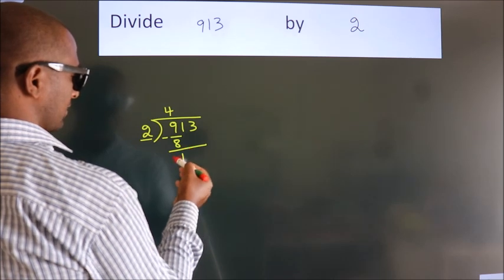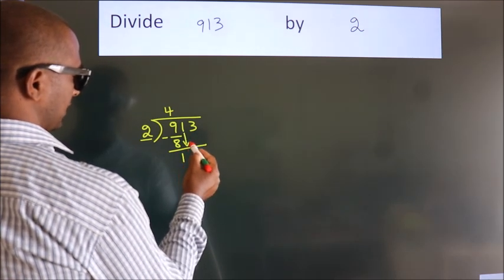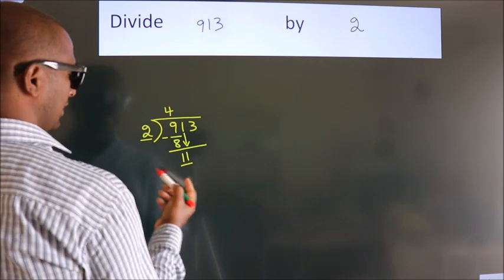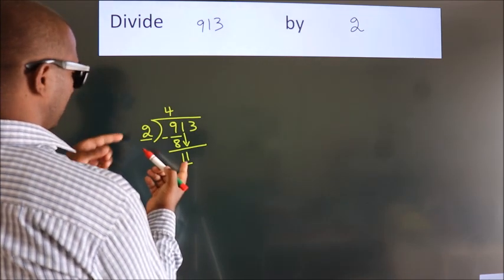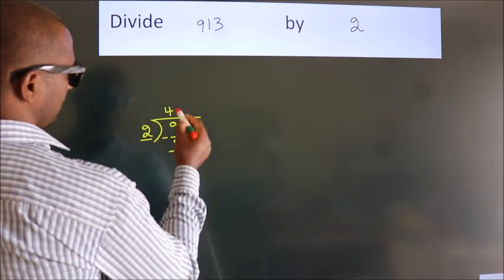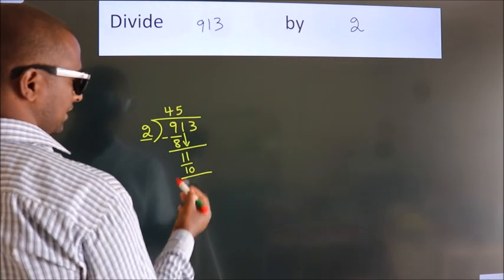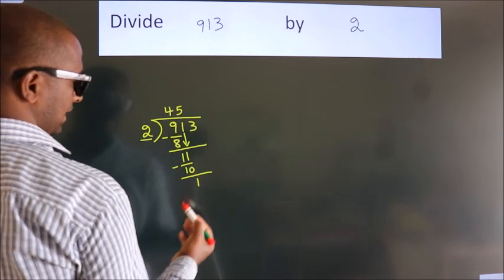After this, bring down the beside number. So 1 down. So 11. A number close to 11 in 2 table is 2 times 5 equals 10. Now we subtract. We get 1.